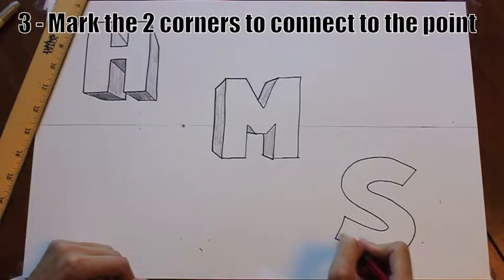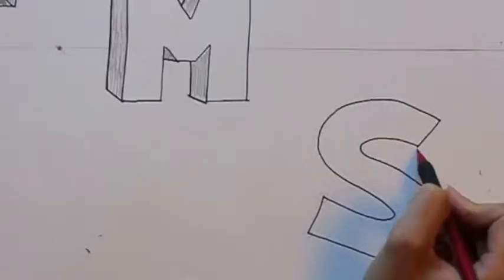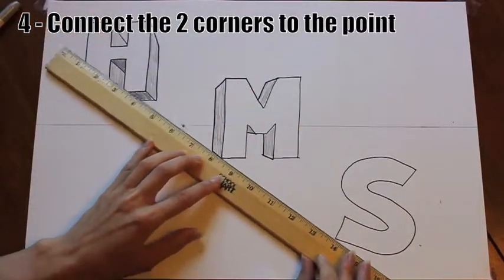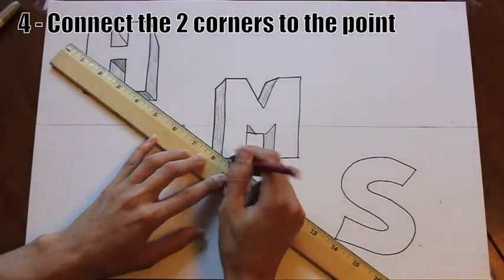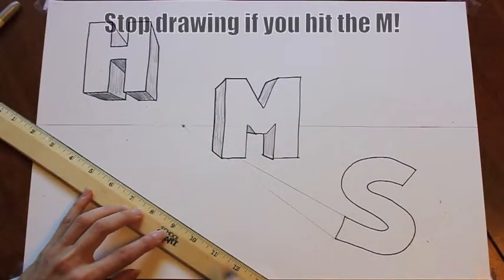Before you draw lines to the vanishing points, mark the corners that you can most definitely connect. I just have two at the end of the tail of the S. Then use your ruler to draw lines from those points to the vanishing point. Stop drawing if you hit the letter M.